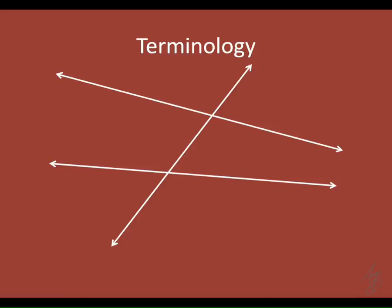Parallel lines never intersect. So parallel lines are lines that are in the same plane that never intersect. Remember skew lines — those are lines in different planes that never intersect. Parallel lines are in the same plane and run alongside each other, never intersecting. Even if two lines don't appear to intersect on the page, if extended they would eventually intersect, so they would not be parallel.